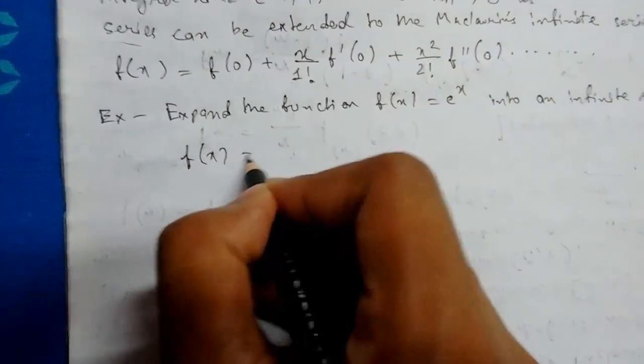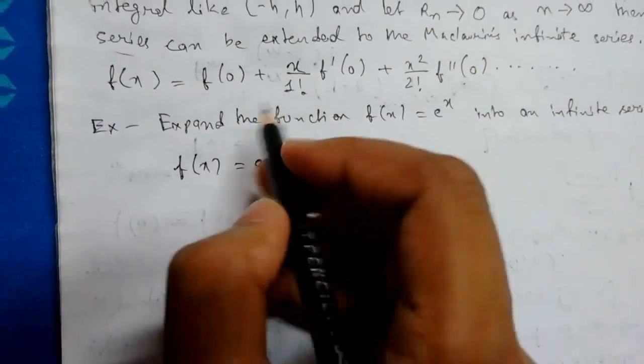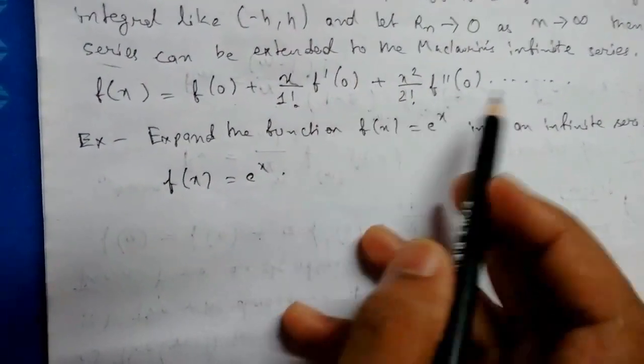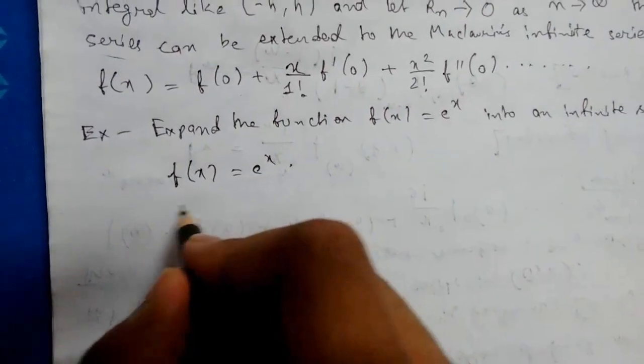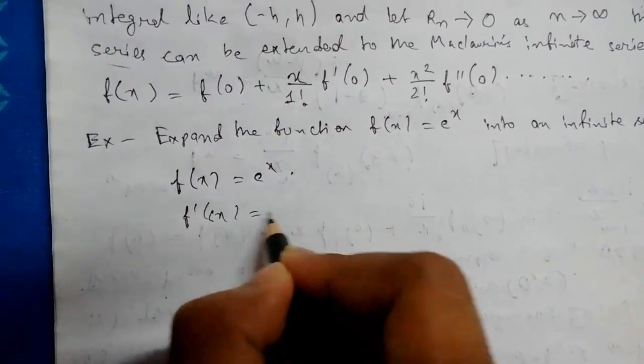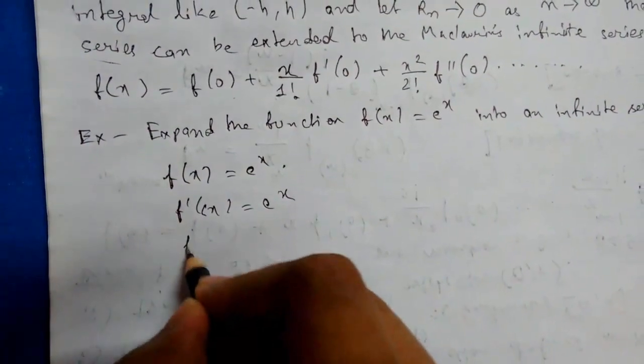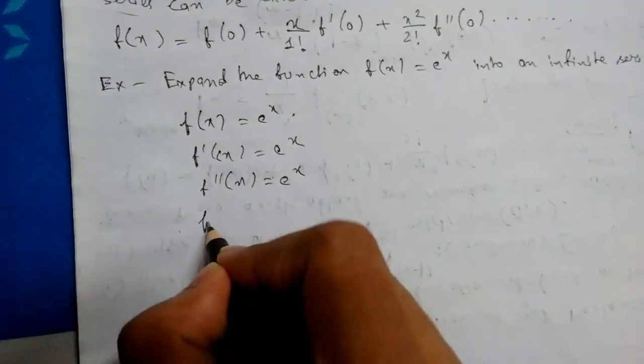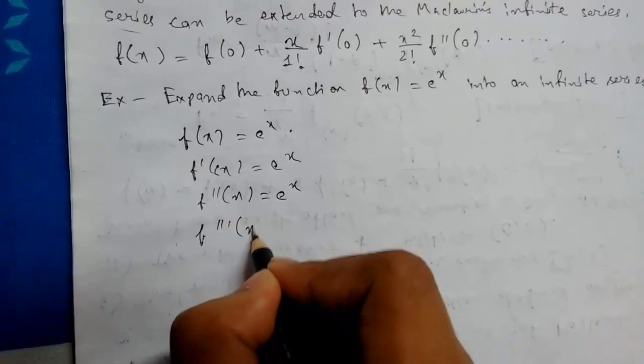f(x) = e^x. We have to calculate f(0), f'(x), and so on. f'(x) = e^x, f''(x) = e^x, f'''(x) = e^x.